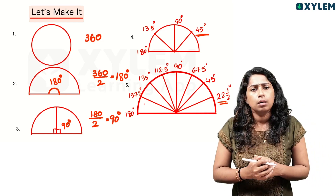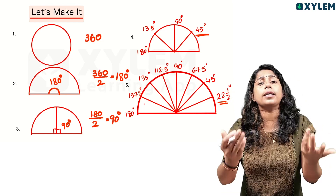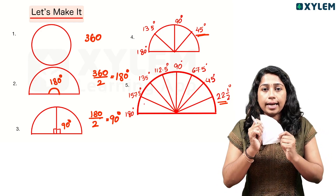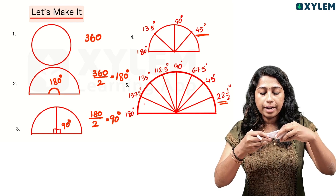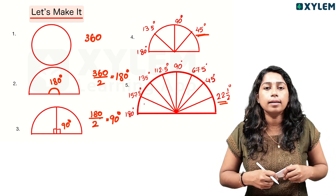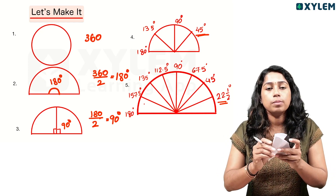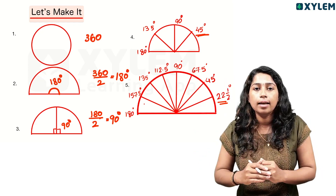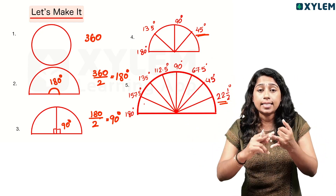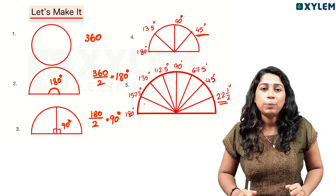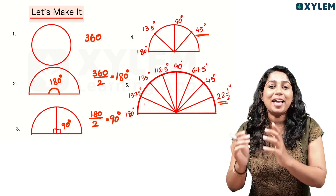Continuing: 45 divided by 2 gives 22 and a half degrees. Now, suppose you want to measure 30 degrees. You have a 90-degree angle — divide it by 3. 90 divided by 3 is 30 degrees. So 30 plus 30 is 60, plus 30 is 90. You can try to make a protractor this way.